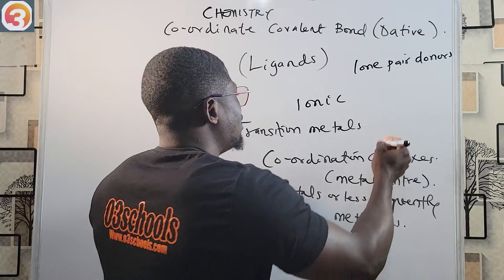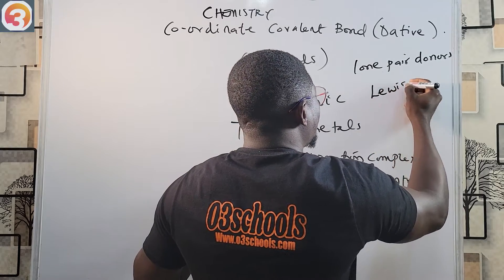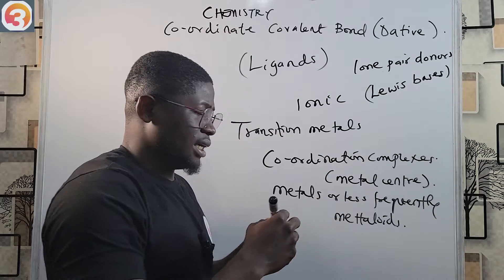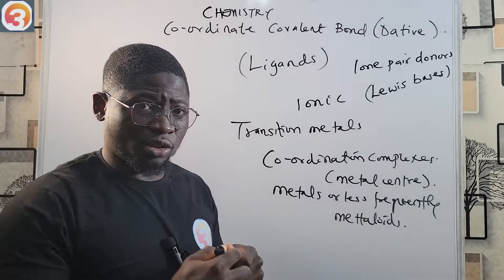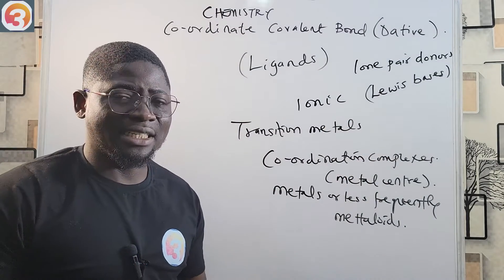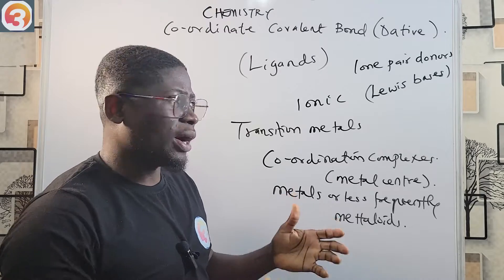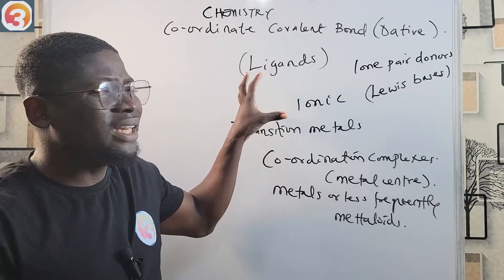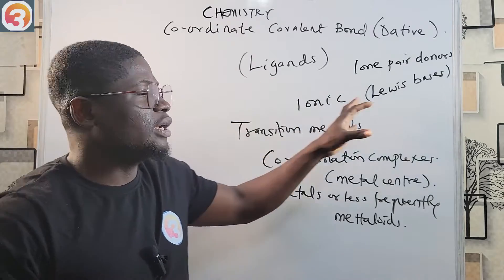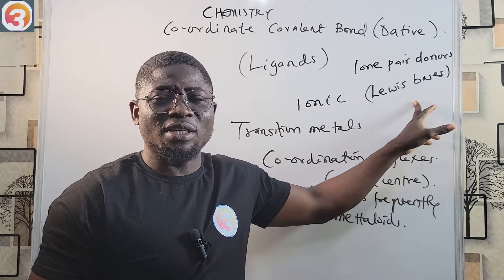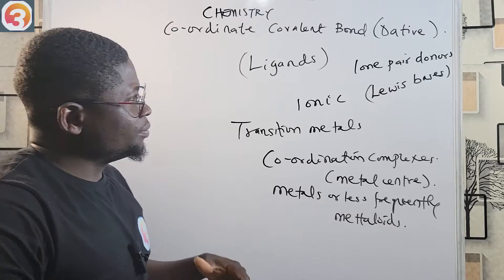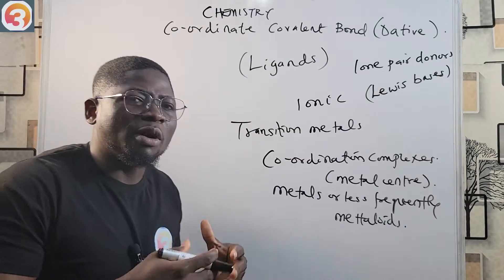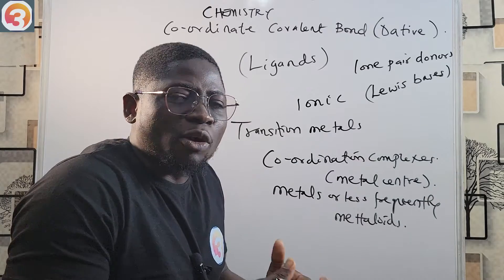Ligands are generally described as Lewis bases. When we get to acids and bases, we'll see what Lewis acid and Lewis base means and understand why ligands are called lone pair donors. Because they are lone pair donors, ligands are called Lewis bases.